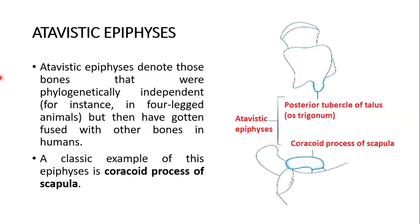What is atavistic epiphysis? Atavistic epiphyses denote those bones that were phylogenetically independent — for instance, in four-legged animals — but have then gotten fused with other bones in humans. A classic example is the coracoid process of the scapula. This is the scapula bone; this is the coracoid process. It was an independent bone phylogenetically and now it has fused with the scapula — it is no more an independent bone. Another example is the posterior tubercle of the talus, the os trigonum.